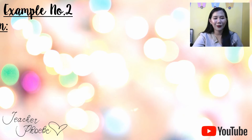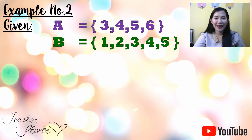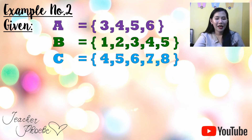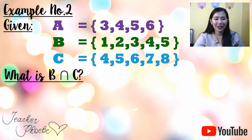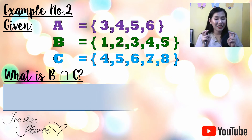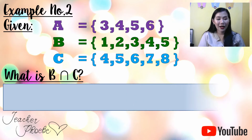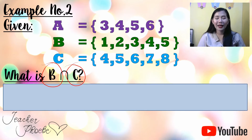Let us have Example 2. Given A is the set {3, 4, 5, 6}, B is the set {1, 2, 3, 4, 5}, and C is the set {4, 5, 6, 7, 8}, what is the intersection of B and C? Getting the intersection means getting the common elements — those that appear in both B and C. Take note: what is being asked is only the intersection of B and C.